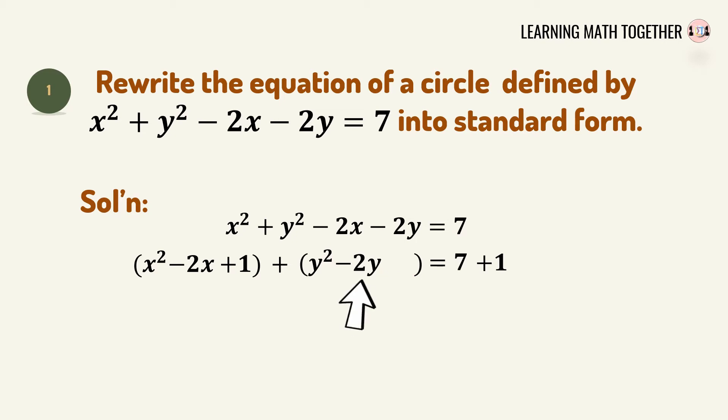For the y variable, do the same: get the numerical coefficient of y, which is 2 — disregard the sign. Divide by 2: 2 divided by 2 equals 1. Square 1, which equals 1. So we add 1 here, and when you do that on the left side you also add 1 on the right side of the equation. The next step is to simplify.